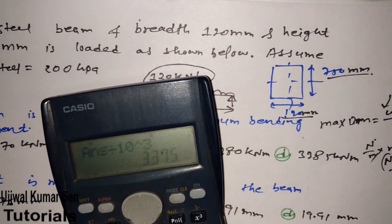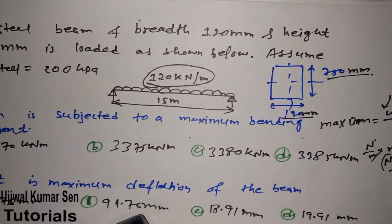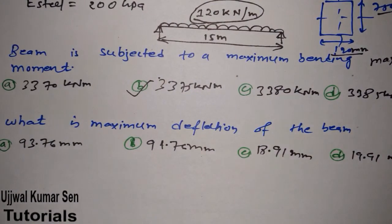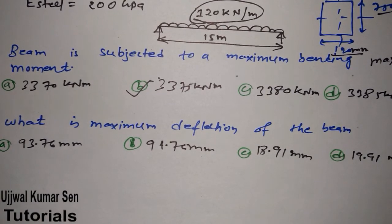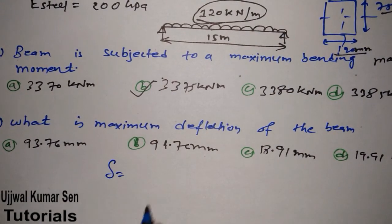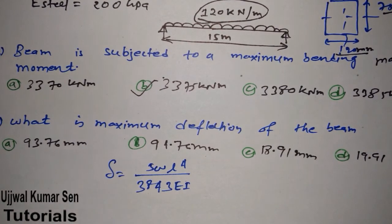The answer we get is 3375 kilonewton-meters, which matches option B. Now let's find the maximum deflection. For a simply supported beam with UDL, the formula for maximum deflection is: δ = 5wL⁴ / (384EI). We know w and E (200 gigapascals), but we need to find I, the moment of inertia.